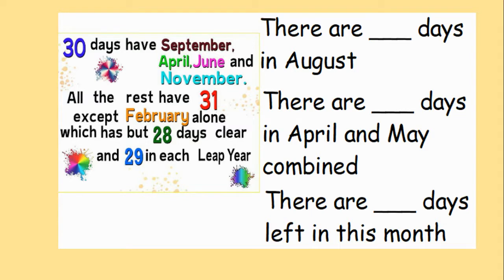Using the chant we need to answer the following questions. There are something days in August. There are something days in April and May combined. Think about what the word combined is asking you to do. There are something days left in this month. Press pause now. Use the chant to work out your answers and then press play once you are ready.